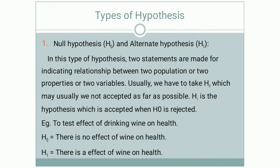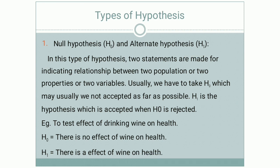Let us understand types of hypothesis. Number 1 is null hypothesis and alternative hypothesis. Null hypothesis is denoted by H0 and alternative hypothesis is denoted by H1. You have learned these in statistics. In this type, two statements are made for indicating relationship between two populations, two properties, or two variables. Usually, H0 is the null hypothesis which may not be accepted as far as possible.